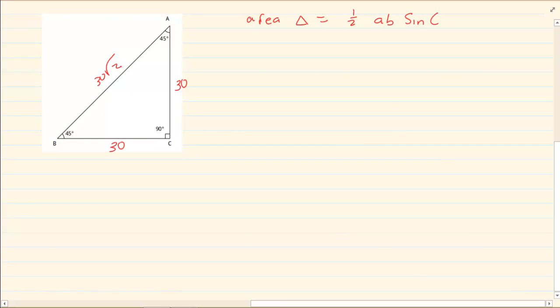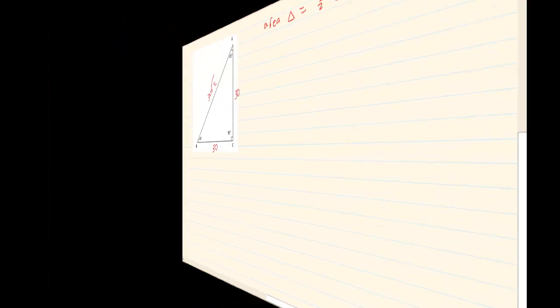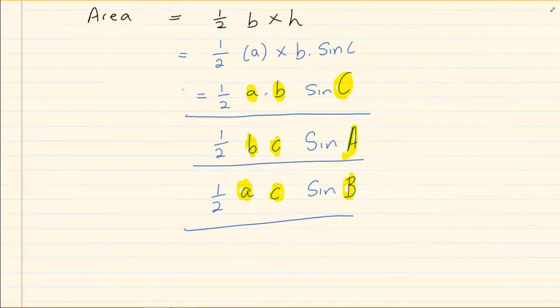The rule says that the area of a triangle is equal to half ab sin c. Now remember you can change it. In other words, if they give me angle b then I will say half ac sin b. Now we have already discussed how you change each formula to suit your needs.